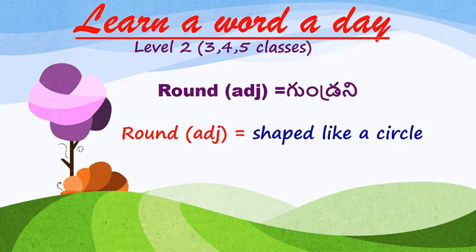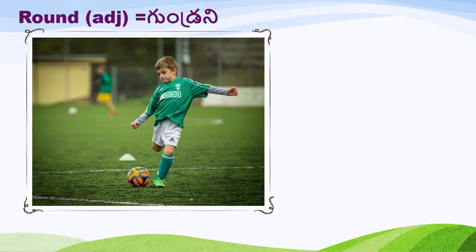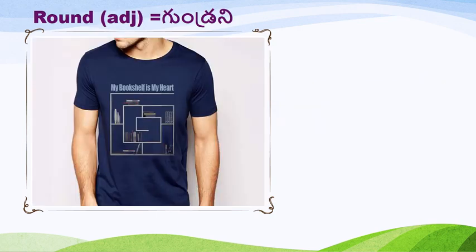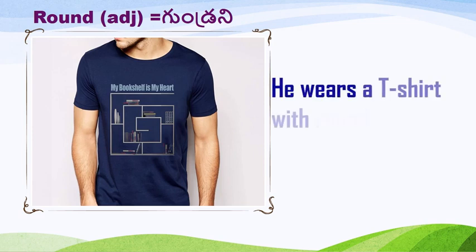Now what do you see in this picture? Yes, there is a boy. He's playing with a ball. How is the ball? Yes, it's a round-shaped ball. He is playing with a round ball. Very good. Now what do you observe in this picture? Yes, there is a man. He wears a t-shirt with a round neck.